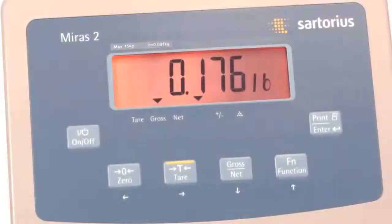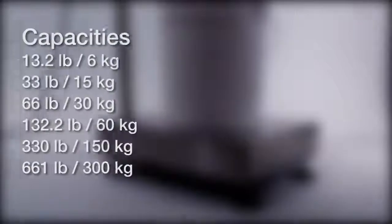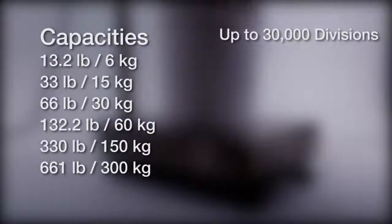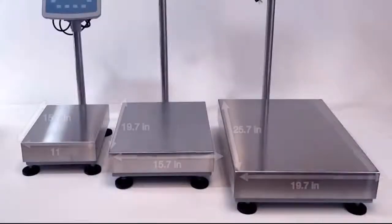Designed for accuracy and durability, the Mirus II has capacities from 6 kilograms to 300 kilograms, offers 30,000 divisions, and comes in three platform sizes.